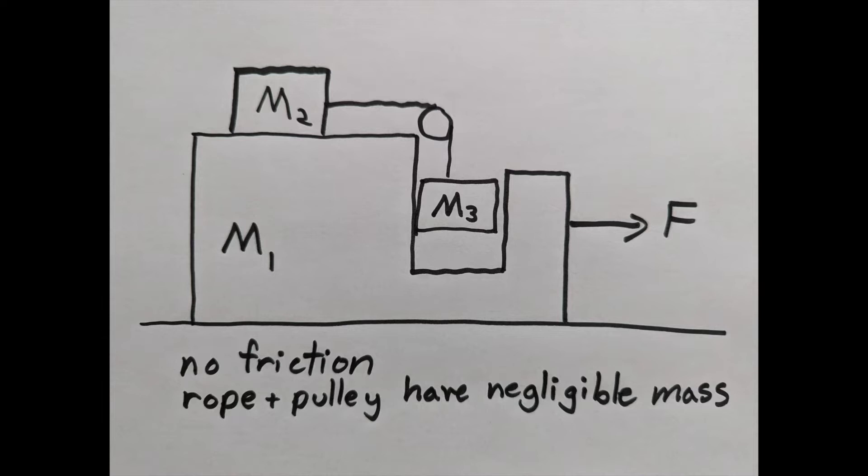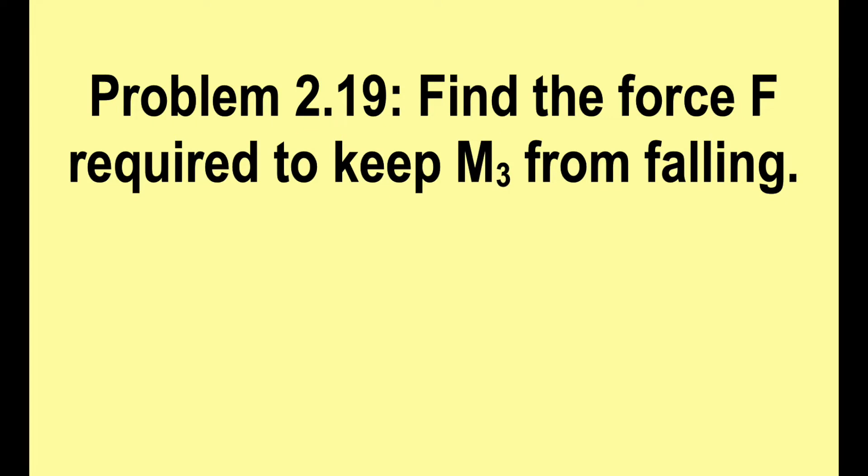m2 sits on top of m1, m3 hangs down over the pulley. The whole thing is being pulled to the right with a force F. There is no friction, and the rope and pulley have negligible mass. The first part of the problem asks what force is required to keep m3 from falling.